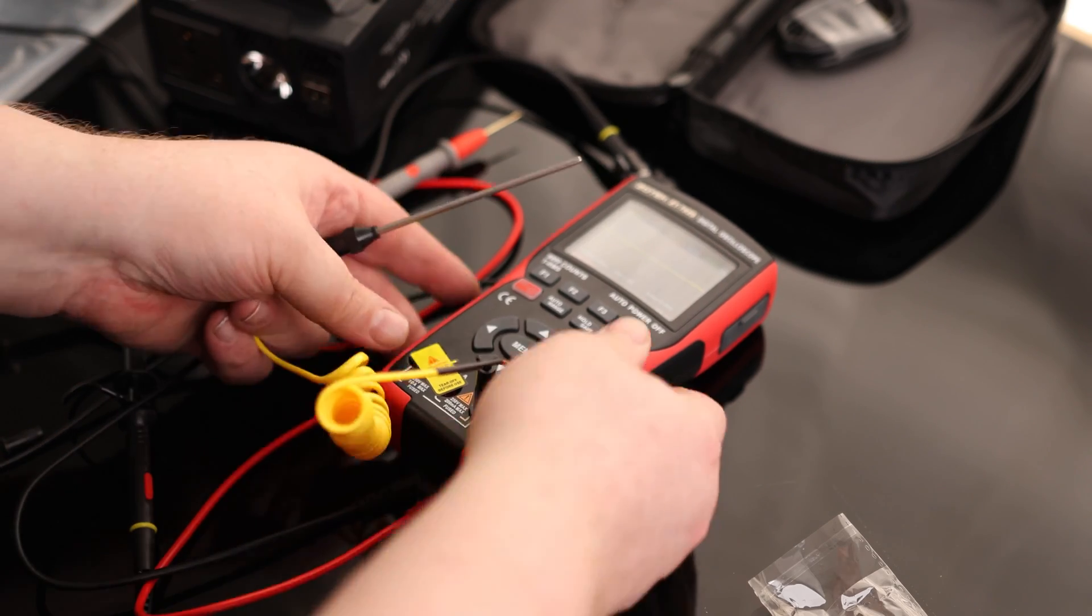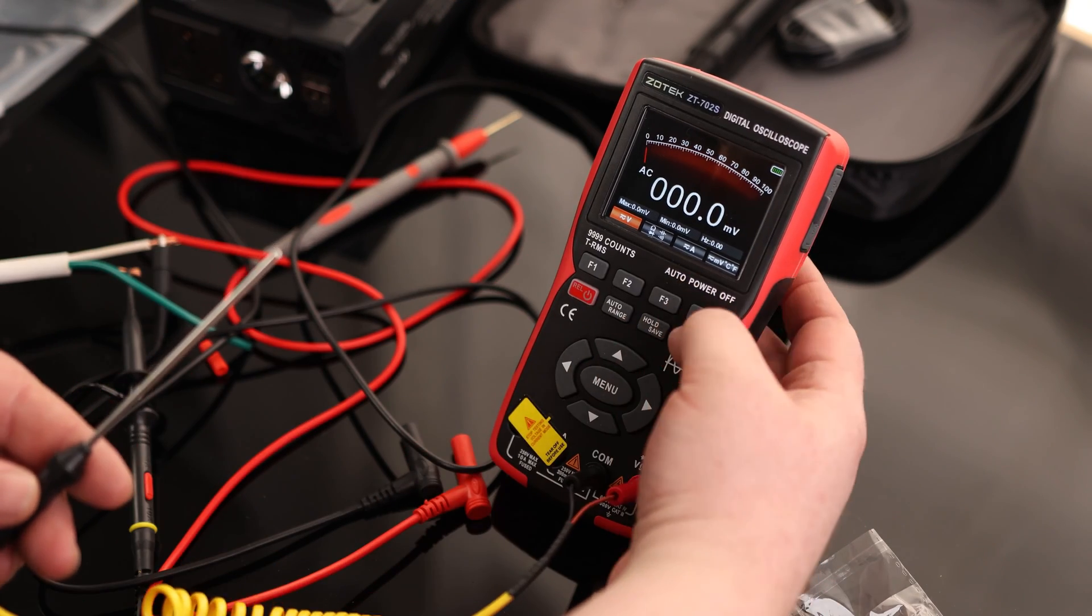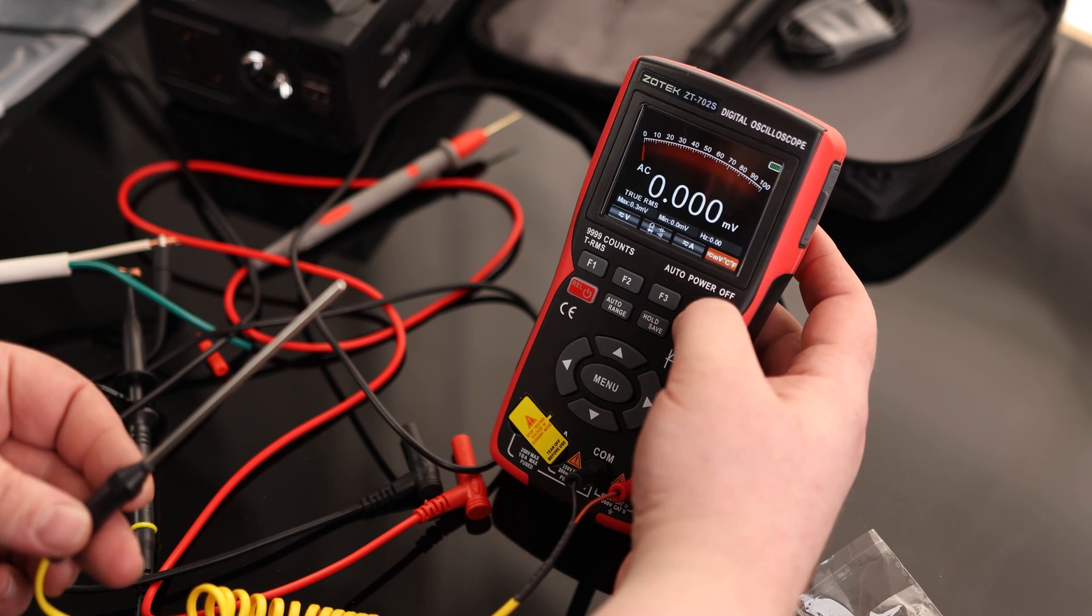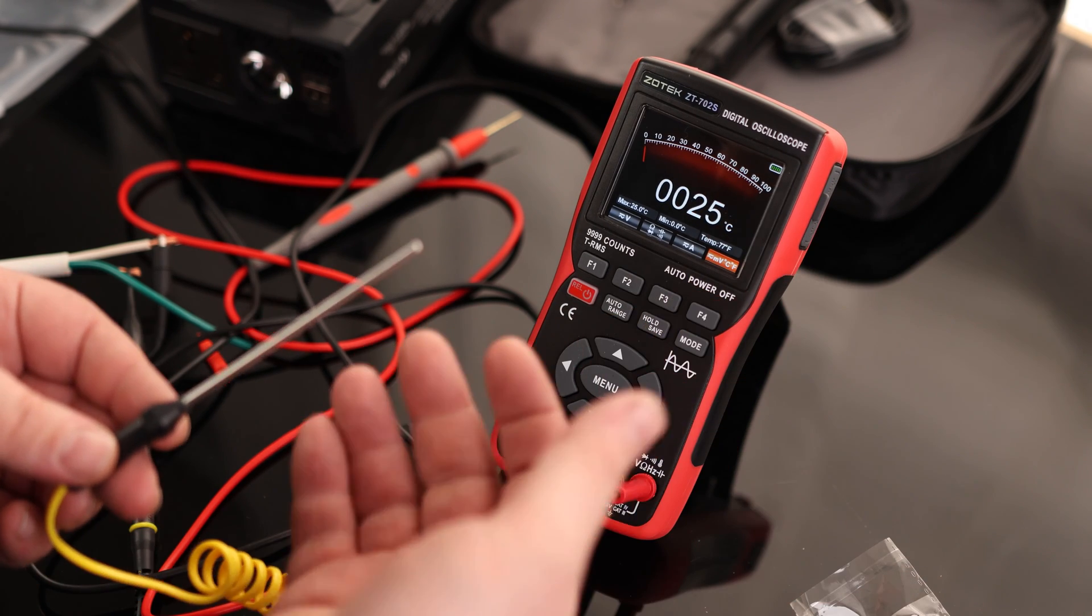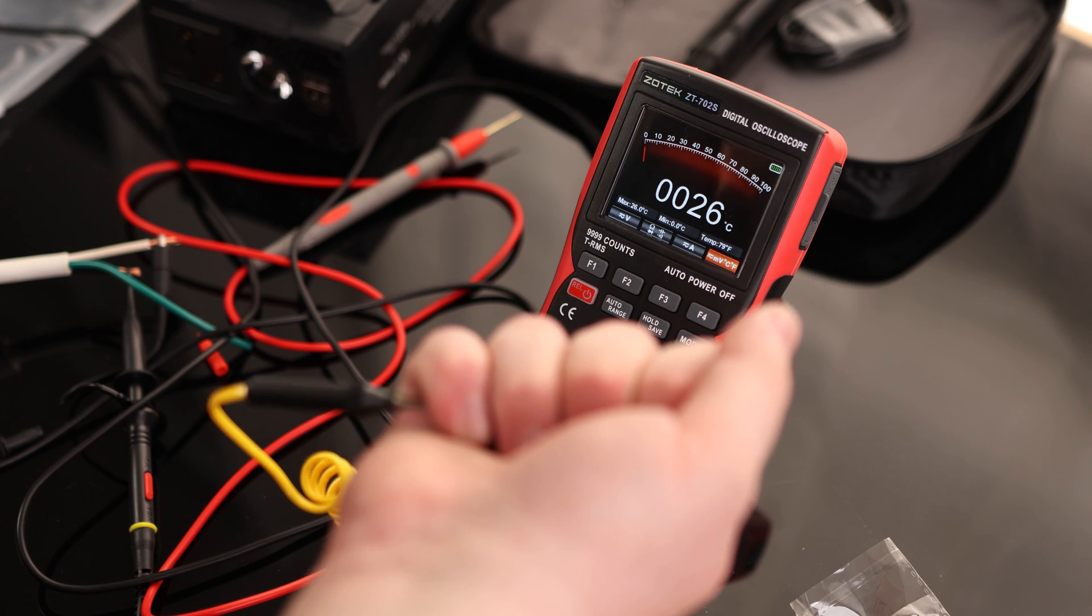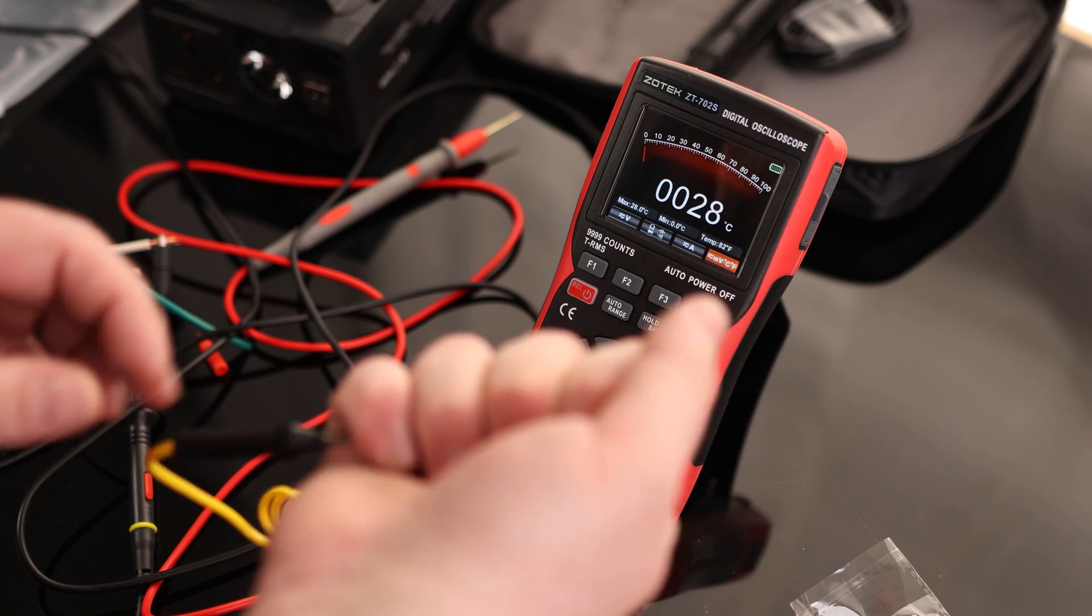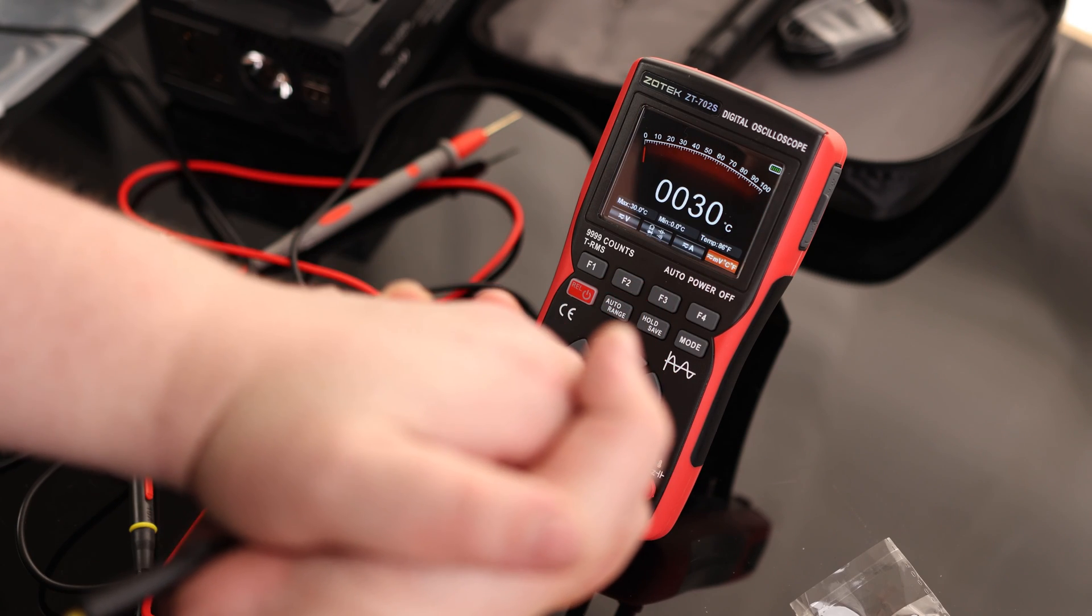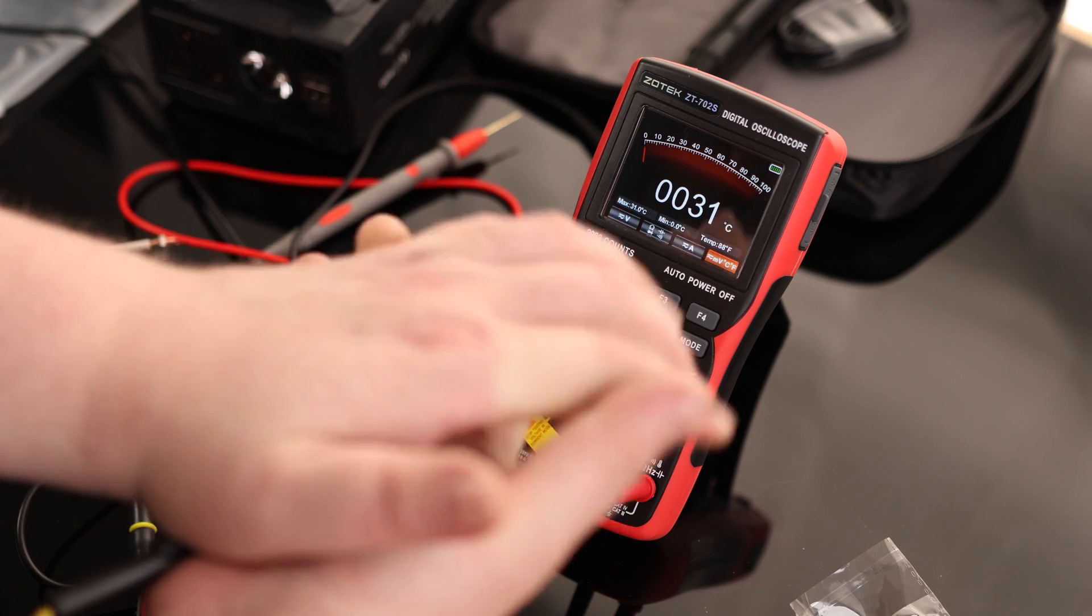Yep, that is exactly what that is. That is a thermocoupler mode. And right here we got our temperature setting. So I'm going to hit F4. And then we got Celsius. So it's rating 25 degrees. If I put my hand on it. And that is warming up.